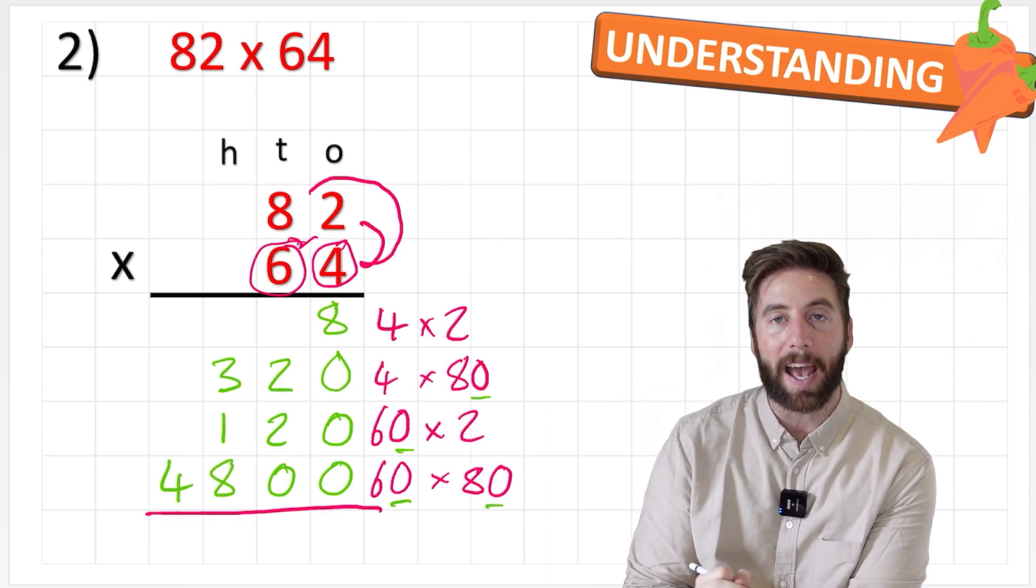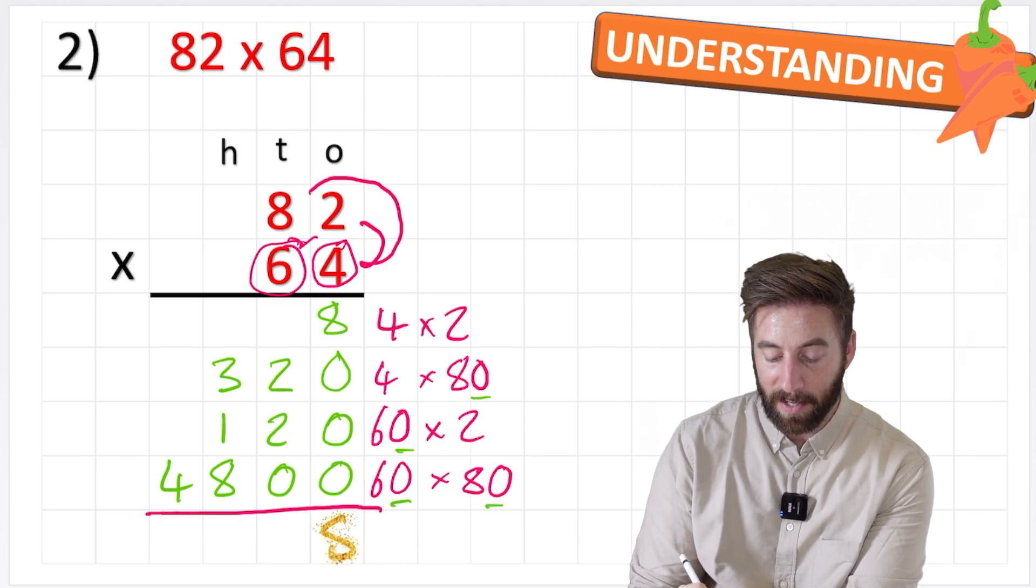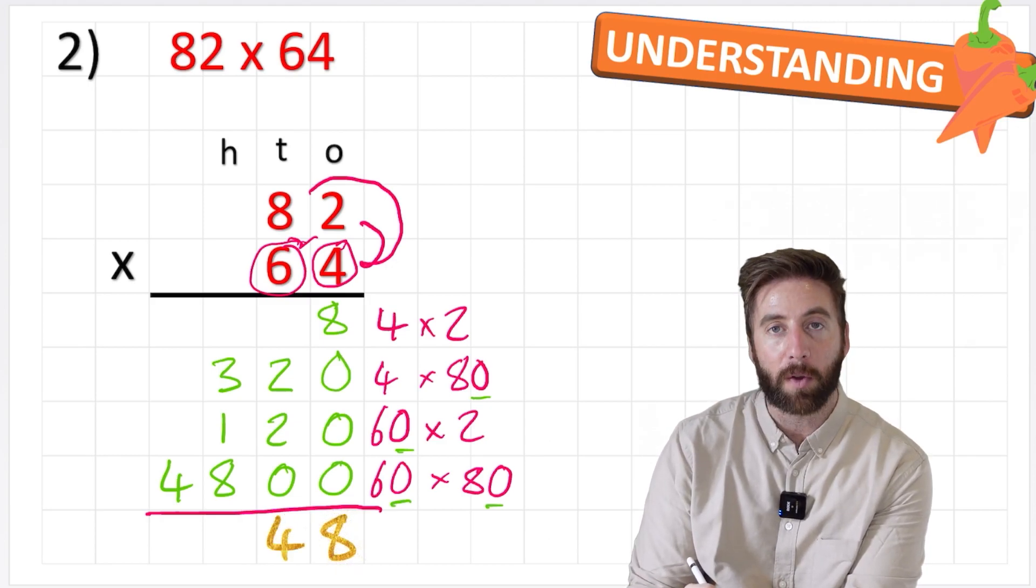Okay, and then we can just simply add those columns up. 8 plus 0, 0, 0 is 8. 2 add 2 is 4. 3 add 1 is 4.